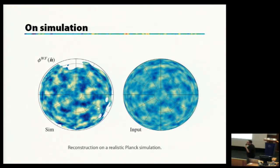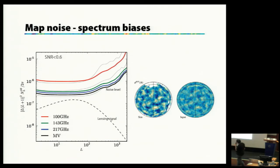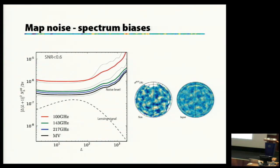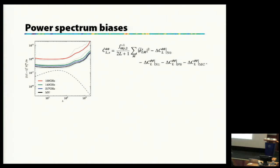On simulation, the input lensing map and the recovered map in a Planck-like simulation are pretty close to each other — though this is a Wiener-filtered map. It is noisy: the signal we're looking for competes with different noise levels depending on which data we use, and the best we can do with Planck still leaves a lot of noise. That's fine for the map, but there's an issue for the power spectrum: once you have the map you want to go to the lensing power spectrum for cosmology, so you need to debias for this noise.